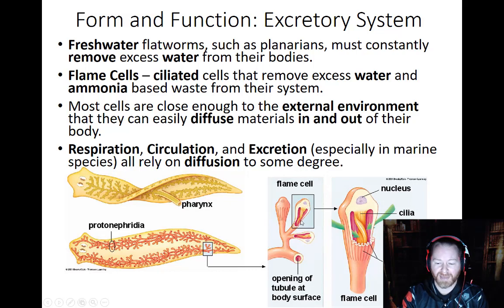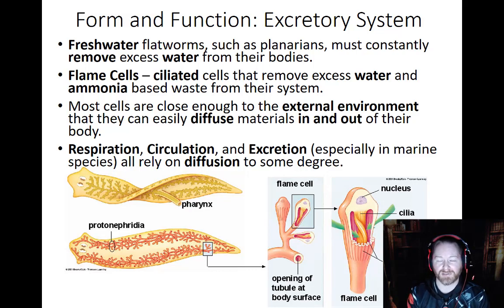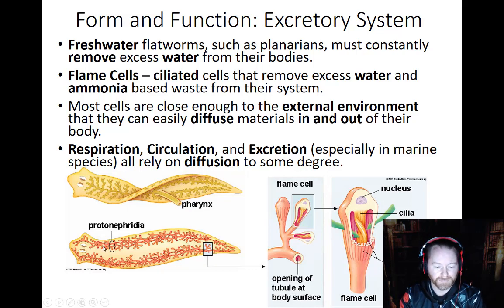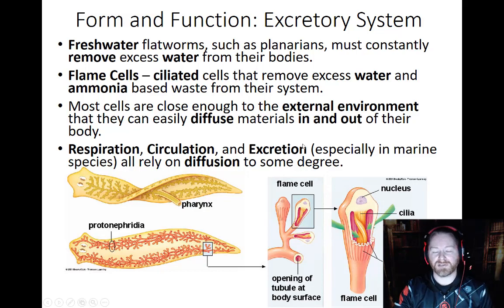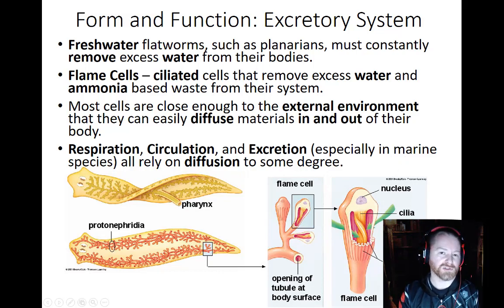Flame cells have flagella and cilia on the inside that flicker and create a current. As that current pumps, it pulls nitrogen waste out of the cells and moves it down a series of tubes and out into the surrounding environment — essentially acting as an excretory system. They still rely on diffusion for most external cells, and some of the deeper ones need that extra help. So respiratory, circulatory, and excretory functions still rely on diffusion to some degree.